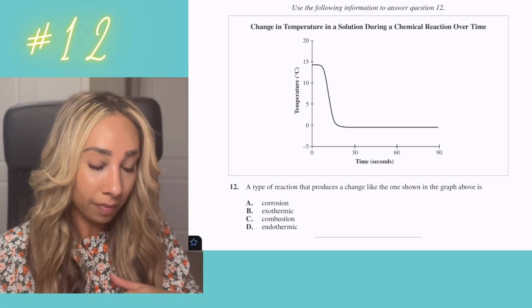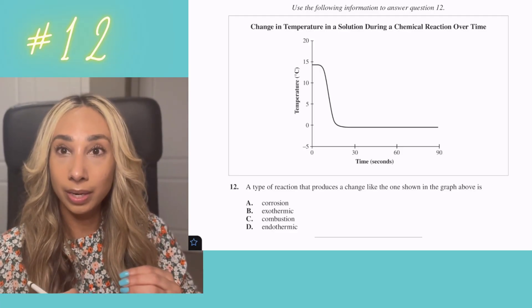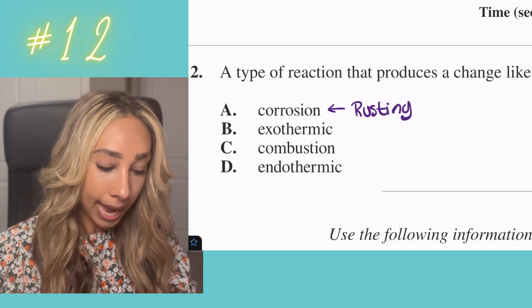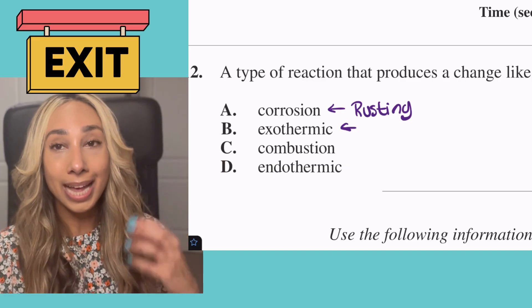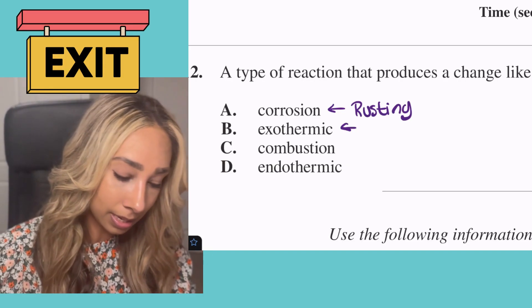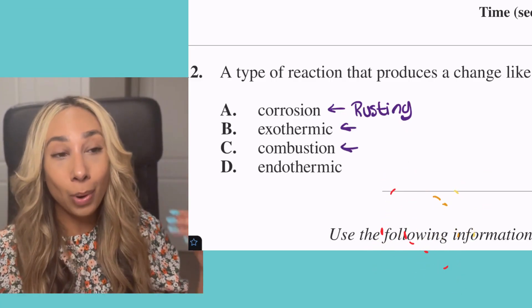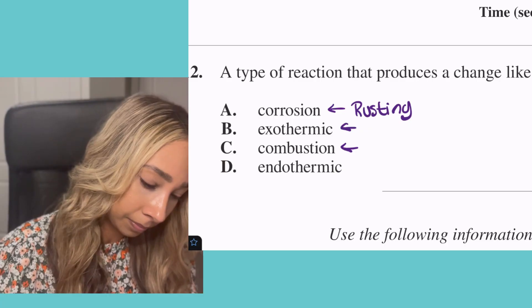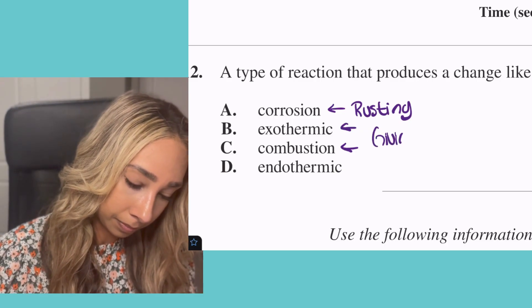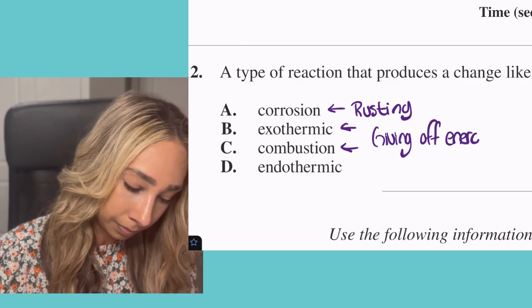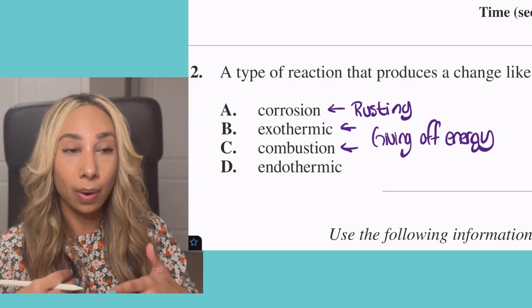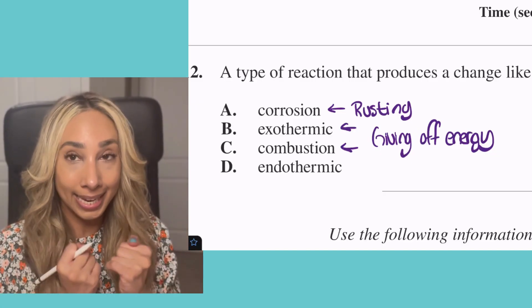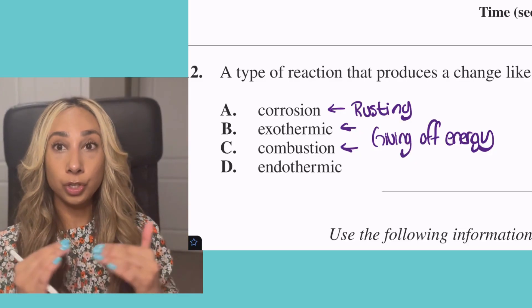Number 12 has some reactions or definitions we need to be clear we know. Corrosion, that's going to be rusting. Exothermic, think exit. Energy is exiting the system, so it's releasing a lot of heat. Combustion, they're basically explosions. Both are releasing a lot of energy. Endothermic is the opposite. If something is taking in energy, it's going to feel cold. It's absorbing all of the energy around it.